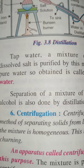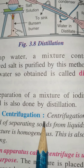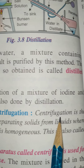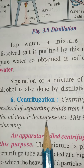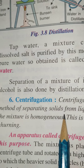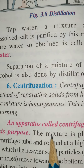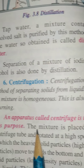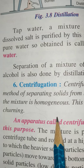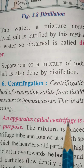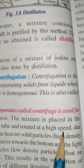The last technique to separate a solid-liquid mixture is centrifugation. It is the method of separating solids from a liquid where the mixture is homogeneous — also known as churning. An apparatus called a centrifuge is used for this purpose, and the mixture is placed in a centrifuge tube and rotated at high speed.